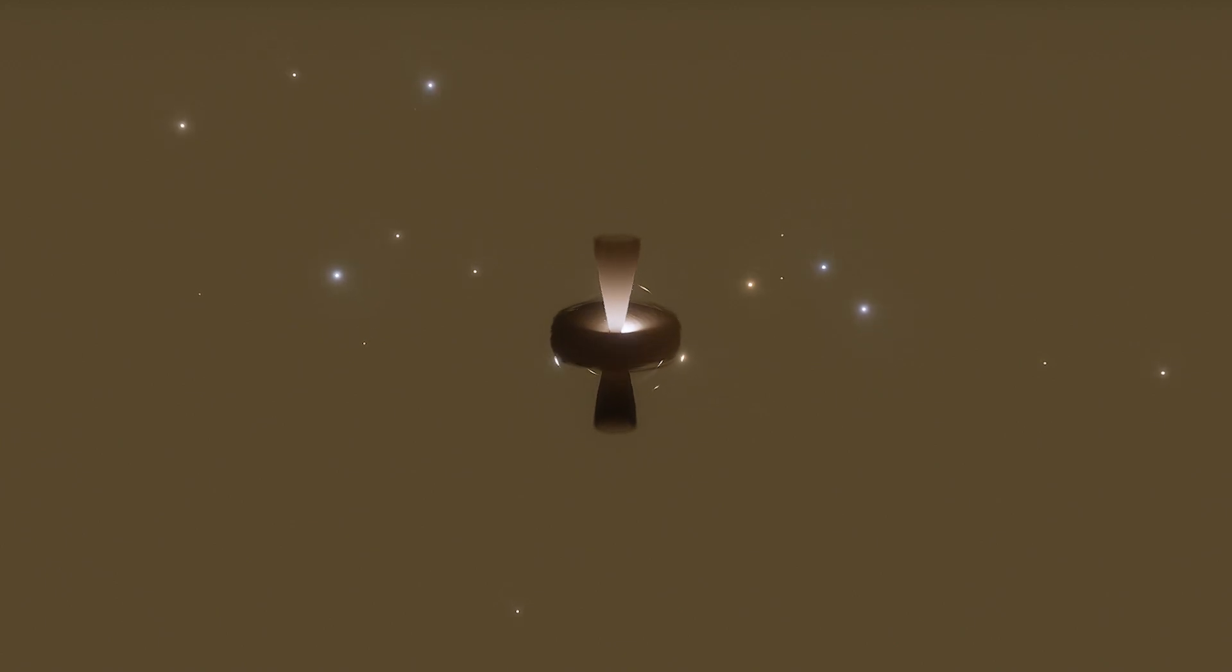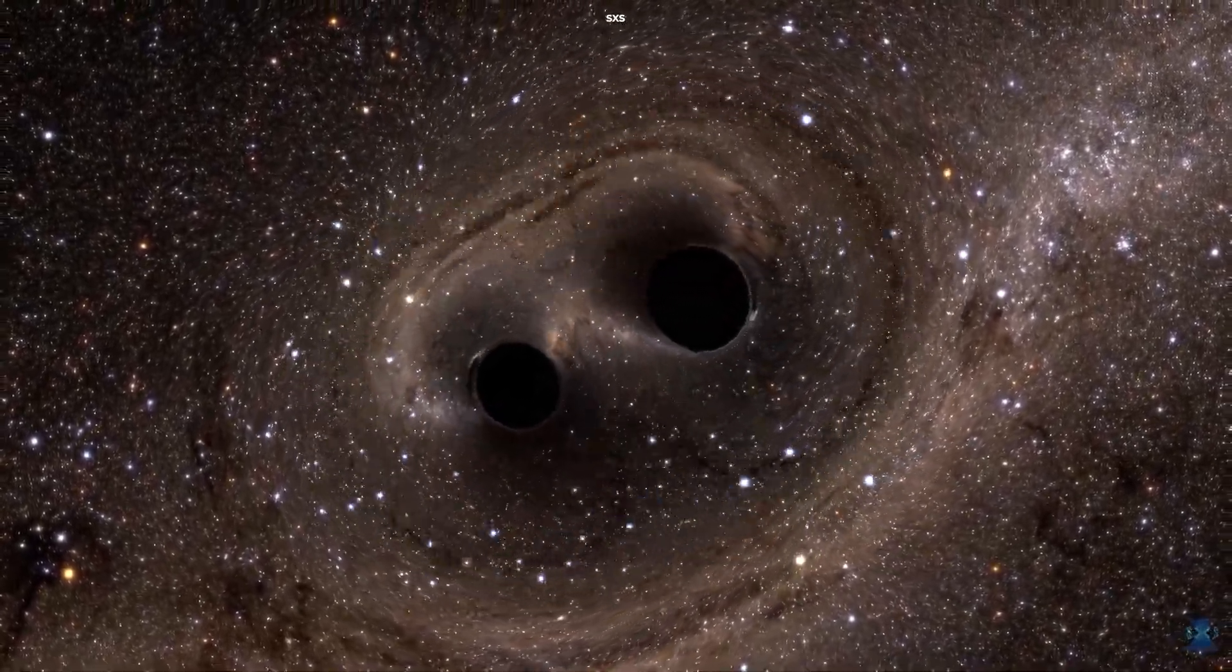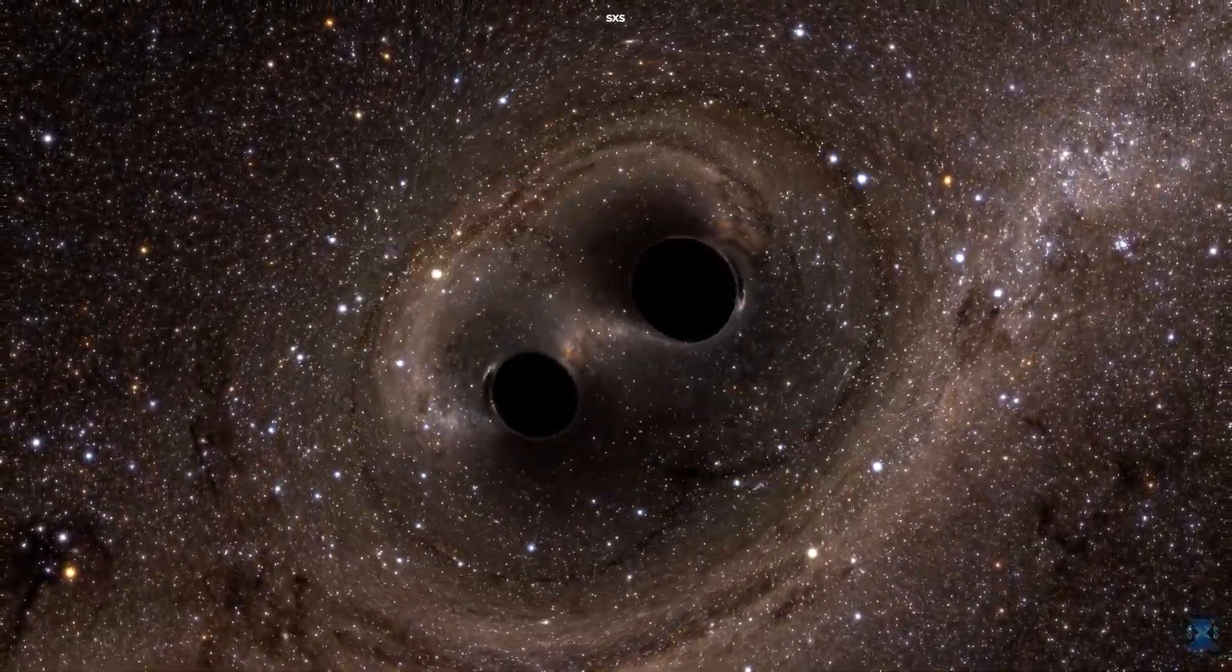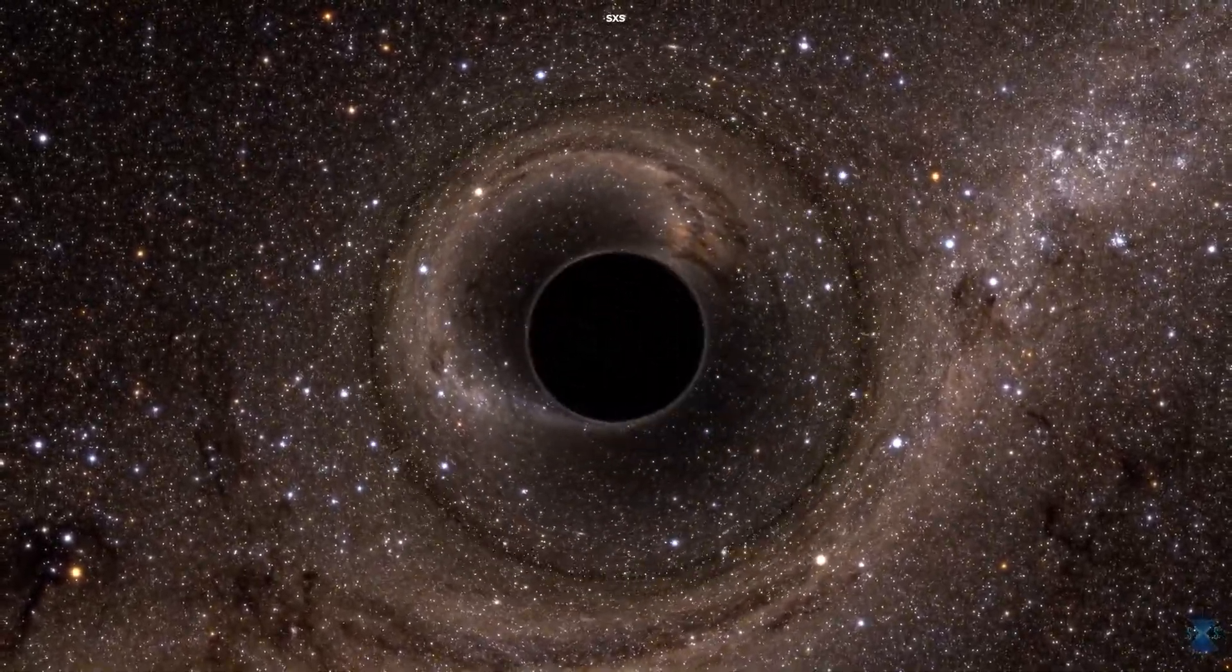The gravitational pull of the black hole increases as it accumulates more mass, causing it to pull in matter even more strongly, which in turn leads to further accretion. Also, when two black holes merge, their combined mass is greater than the sum of their individual masses, so they make a more massive black hole.